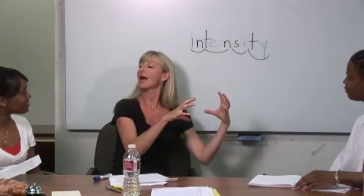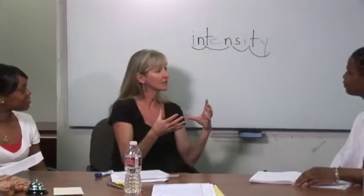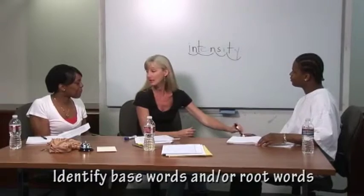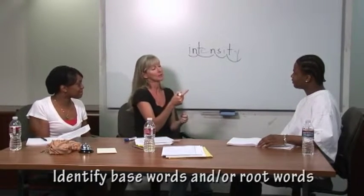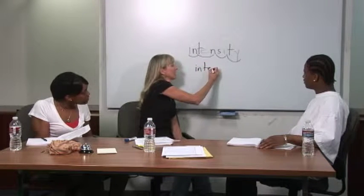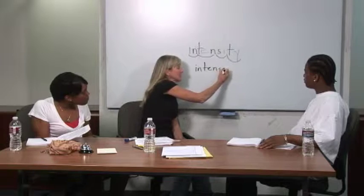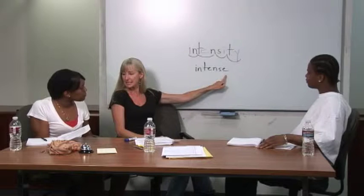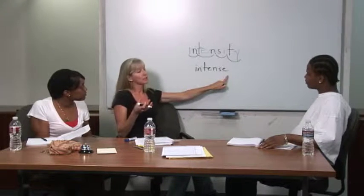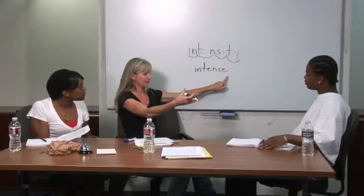There's a base word in this word that a suffix has been added onto at the end. Remember, suffixes are a letter or group of letters that you tack onto the end of a word. And the base word I'm going to show you here is going to help us really get at the meaning of this. The base word is intense. This is the base word — intense. Intense is an adjective. Remember, adjectives are words that describe things.